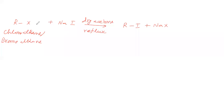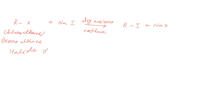So what is happening here is that the halogen is exchanging — this halogen comes here, this halogen goes there. Therefore we can say it is a halide exchange reaction.